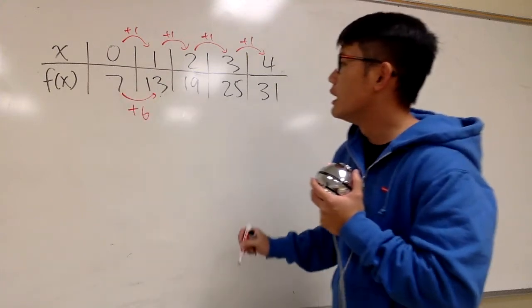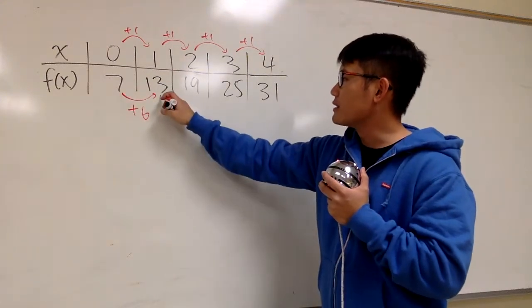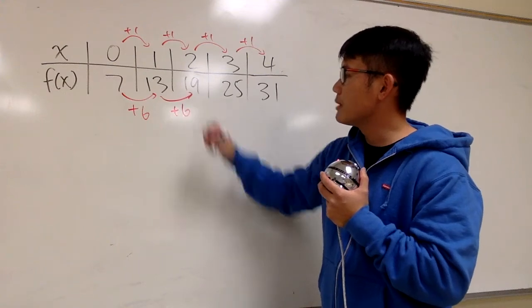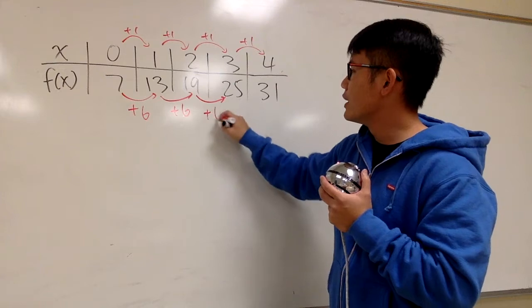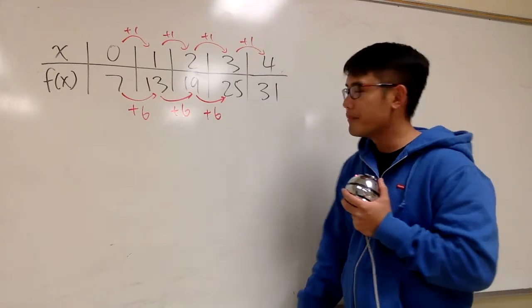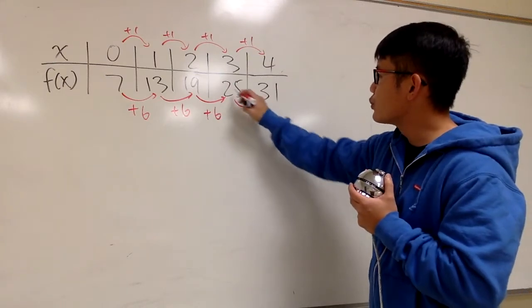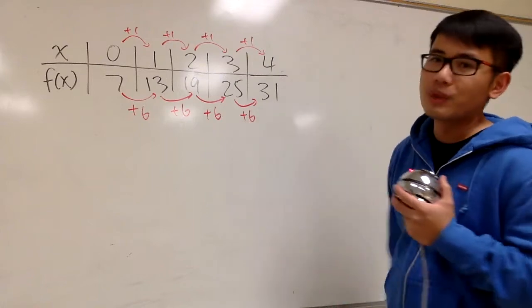So plus 6 from 7 to 13. And then from 13 to 19, that's still plus 6. And then from 19 to 25, yes, we go up by 6. And if I add 6 to 25, yes, we end up with 31.